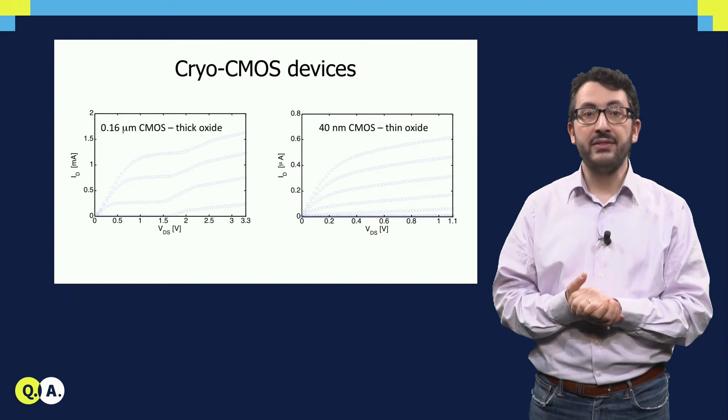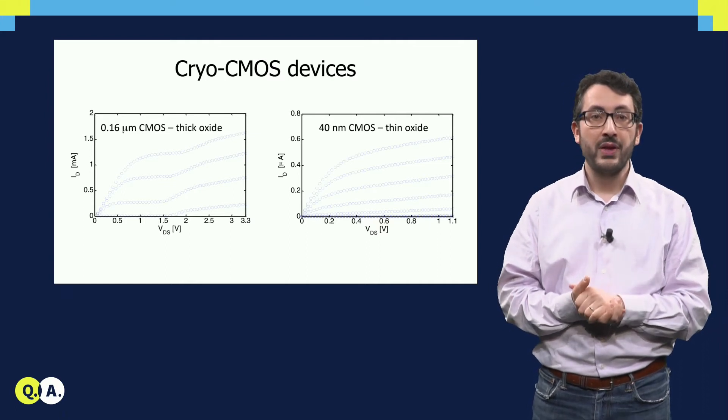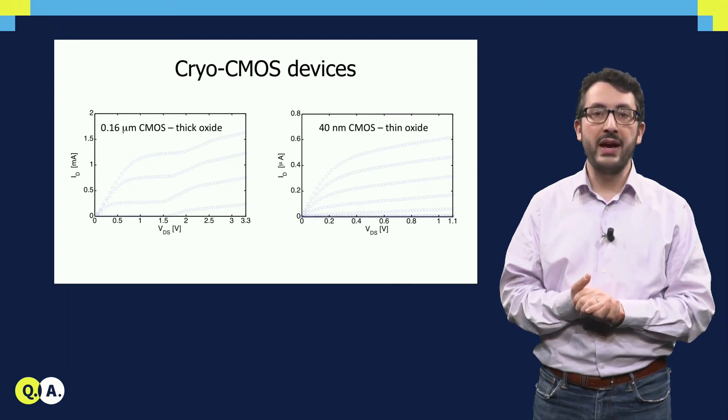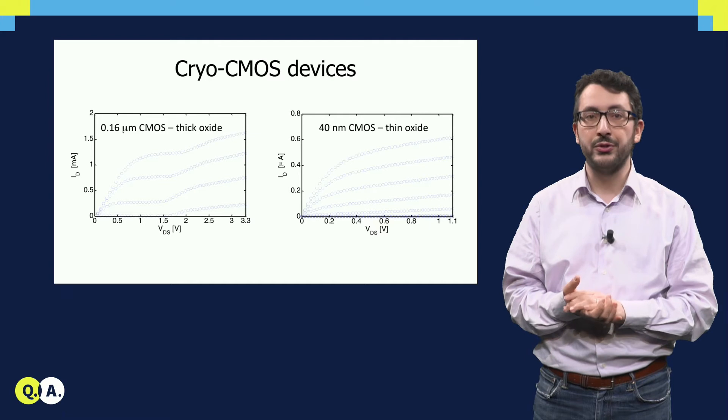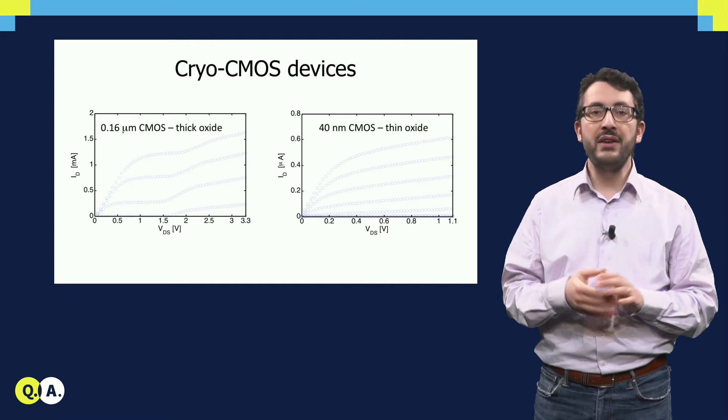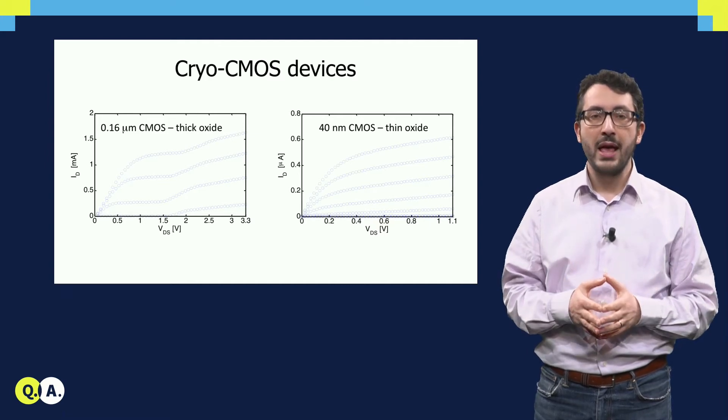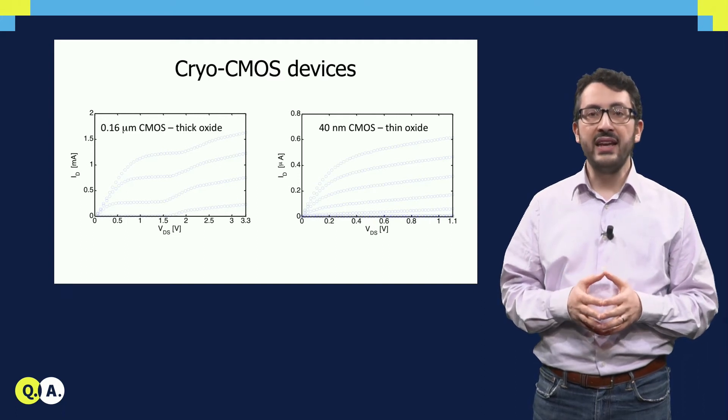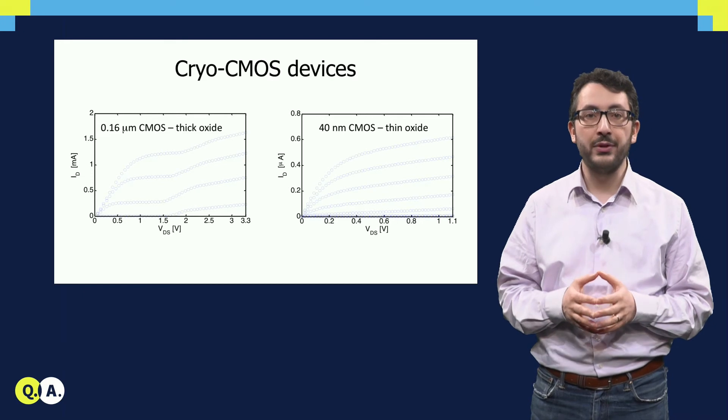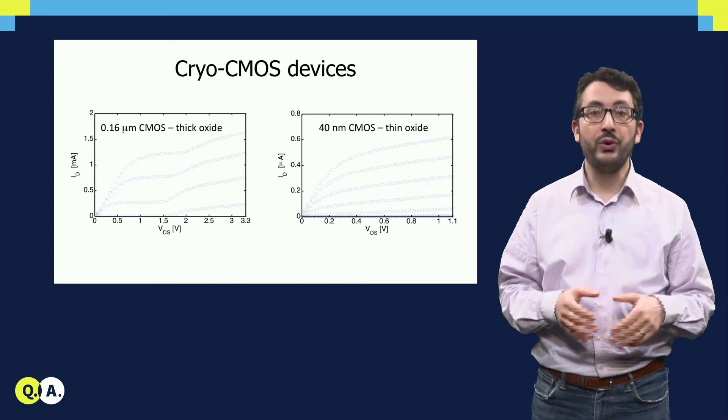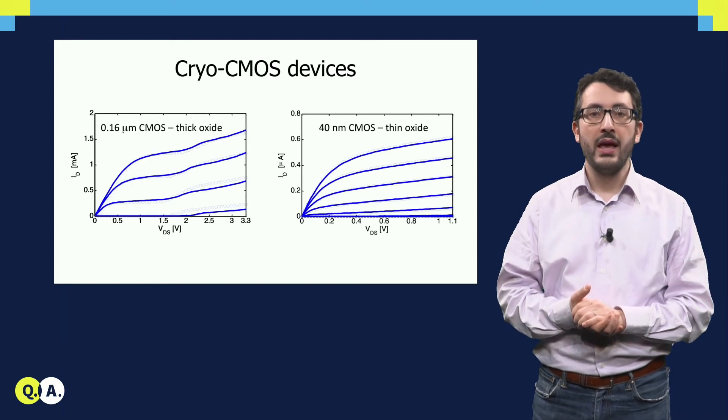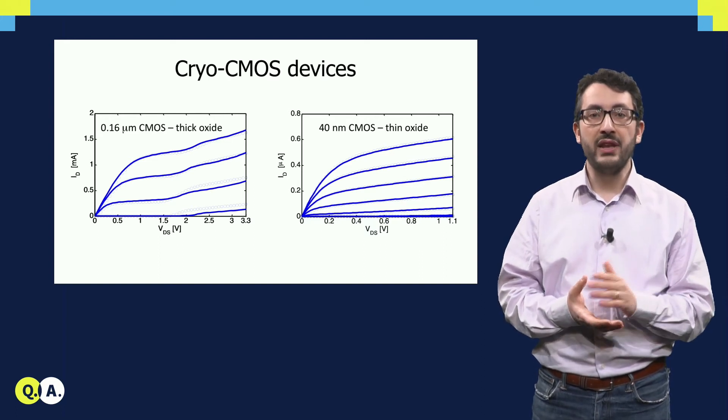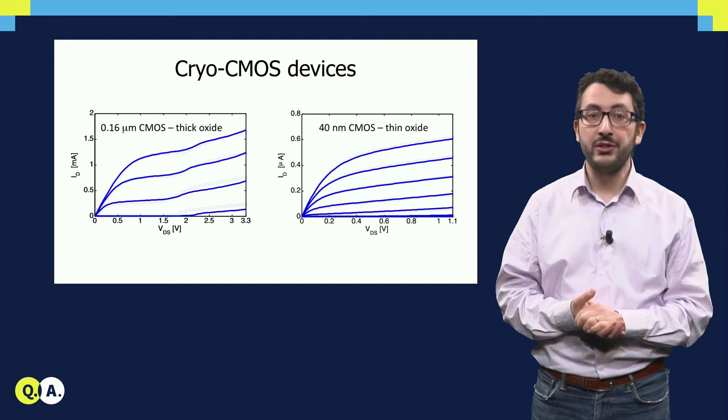So you have these very funny different behaviors. But the nice thing is that we can predict such behaviors. I can take the standard model used for those devices at room temperature and extend it to cryogenic temperature. I can show here that this model, shown as the solid lines, fits very well the measurement data, shown as dots.